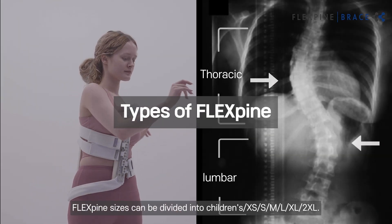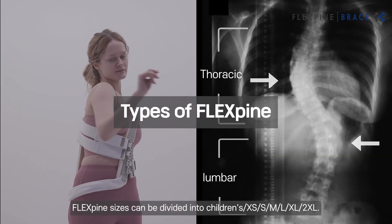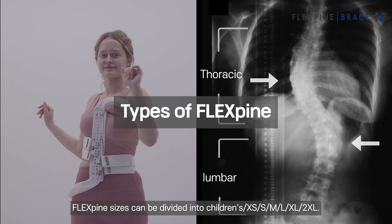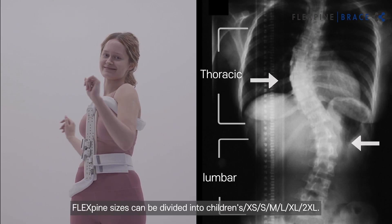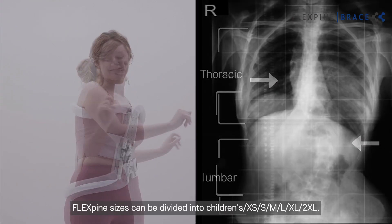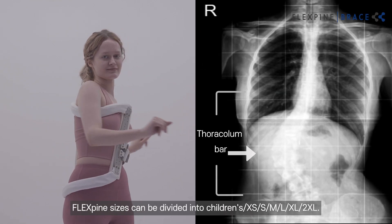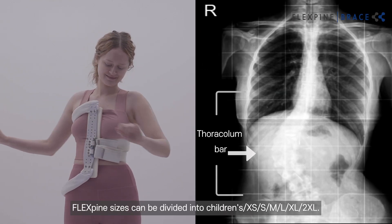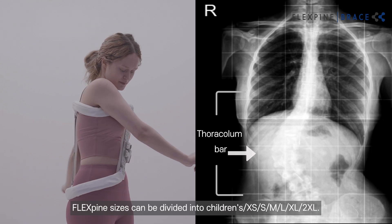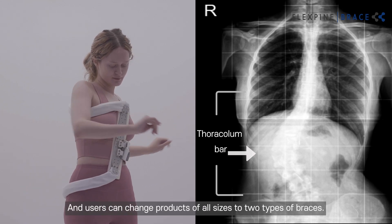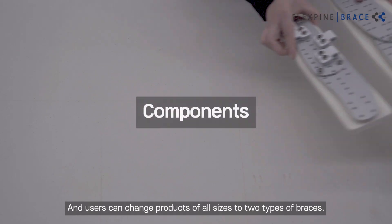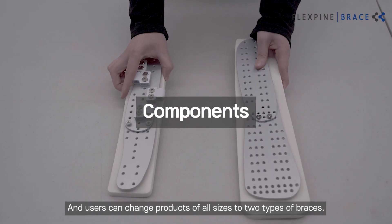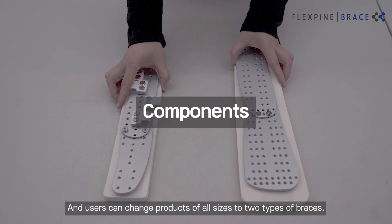Flex Spine sizes can be divided into children's, extra small, medium, large, extra large, and double extra large. Users can change products of all sizes to two types of braces.